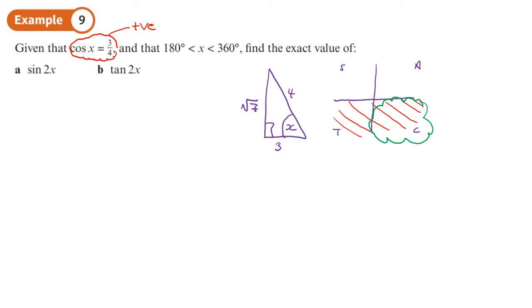Right, so given that information, let's write down. We've got cos x is 3 over 4. Sin x, well, that's going to be negative because of where we are on the cast diagram. Only cos is positive. And that's going to be negative root 7 over 4. And tan x, well, that's also going to be negative because of where we are in the cast diagram. And that will be negative root 7 over 3, opposite over adjacent.